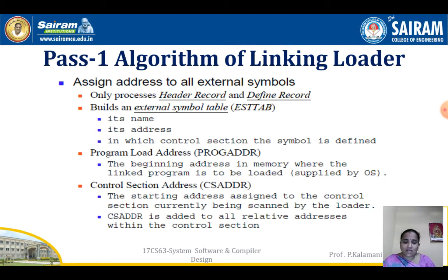Just like the Pass 1 algorithm of an assembler builds a symbol table, the Pass 1 algorithm of the linking loader builds an external symbol table — EST-TAB — that contains the name, address, and the control section in which the symbol is defined. These three pieces of information are stored in the external symbol table.